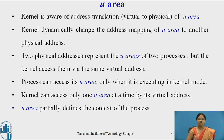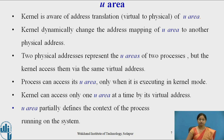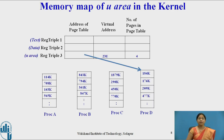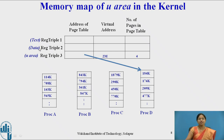Now let us see how the kernel accesses the u-area of processes running in kernel mode, and examine the memory map of the u-area in the system. As shown here, we have four processes: Process A, B, C, and D. This is the kernel register triple. The first register triple contains text, the second contains information about data, and the third register triple contains information about the u-area.